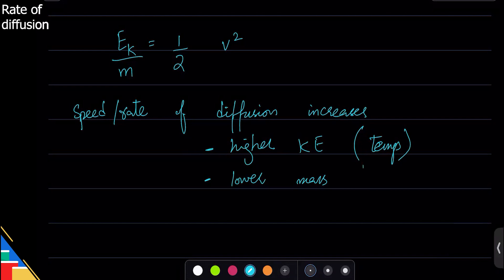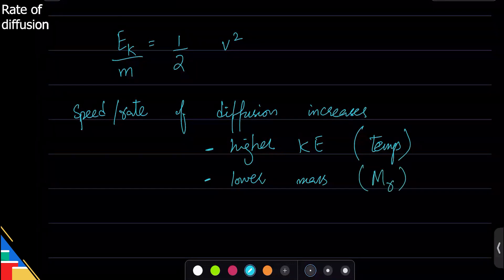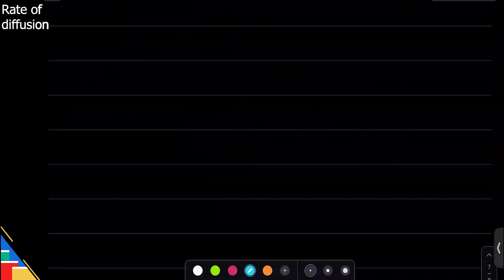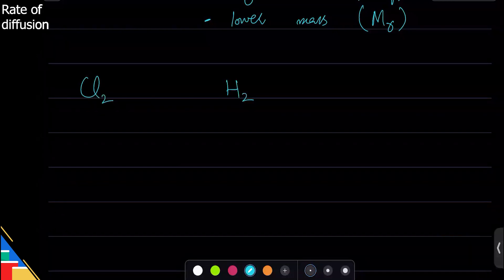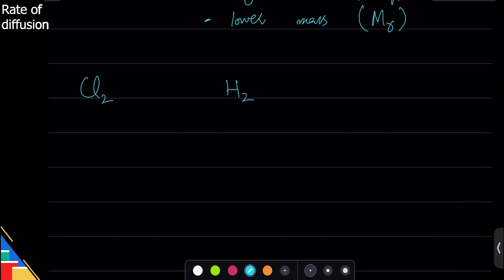And lower mass, which means Mr, relative mass of things. Every particle that we know we have assigned it a relative mass, and that relative mass is given in the periodic table. So for example if you have chlorine, then that is Cl₂, and I have hydrogen that is H₂.